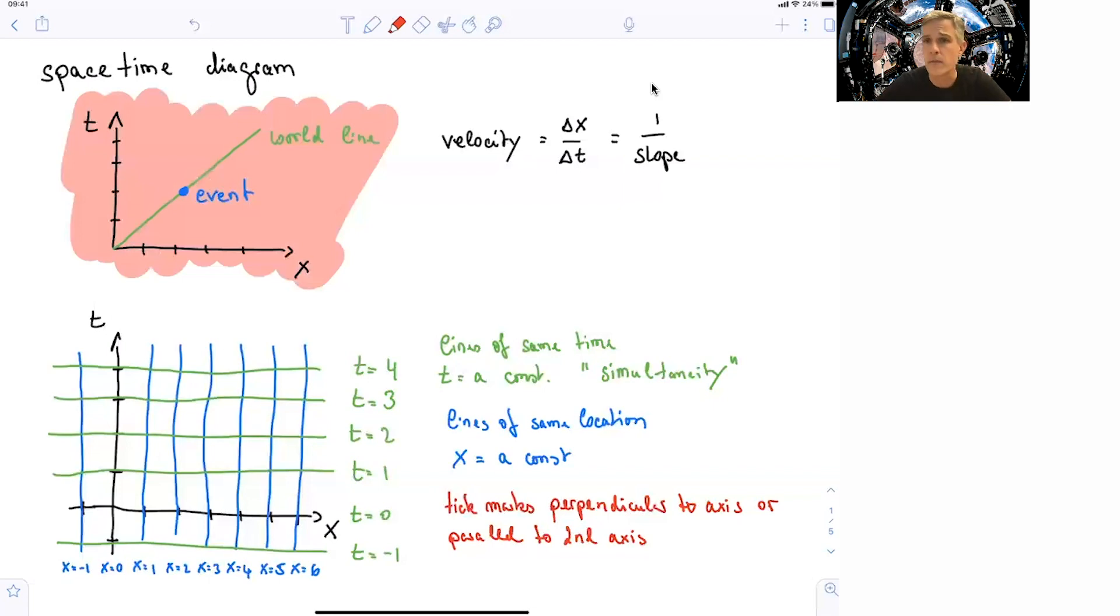A world line is just a sequence of events as they occur. In this case, something seemed to be moving with constant velocity. The world line is just a continuous line. The velocity of this event is delta x over delta t, which is 1 over the slope.